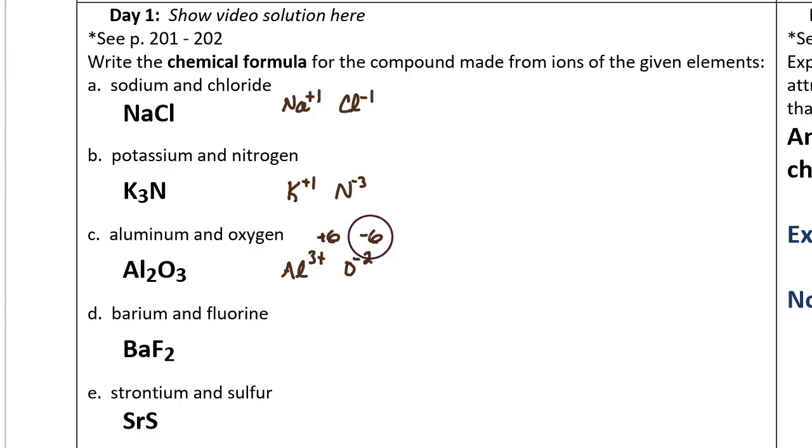And those do add together to create a neutral compound. We have to have two aluminum ions for every three oxide ions. That's shown by writing Al2O3.